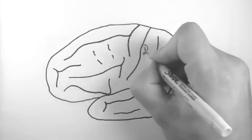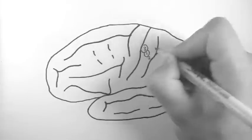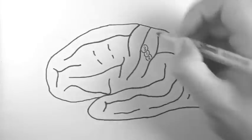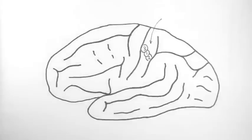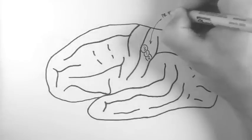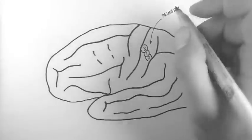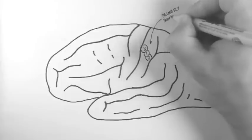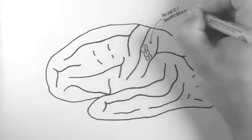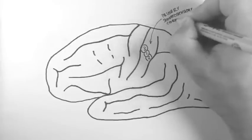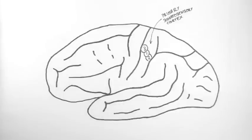So first of all, I'll label Brodman areas 1, 2 and 3. This is in the postcentral gyrus. This is the primary somatosensory cortex. This is where the inputs of all your touch from your body come into the brain. They're labelled in this order: 3, 1, 2, by convention.